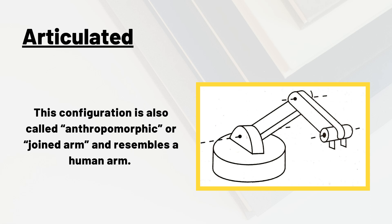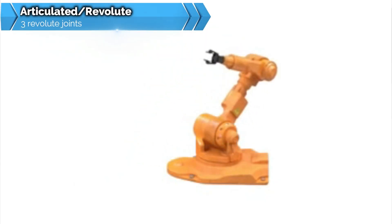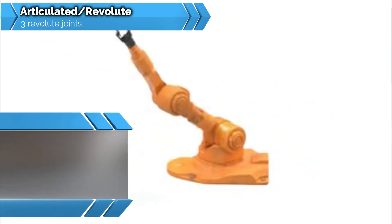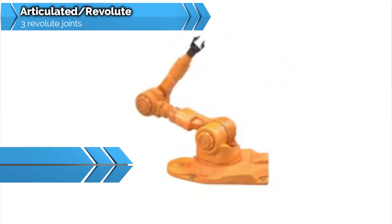Last but not the least, we have articulated or revolute type of configuration. Here we have three revolute joints or three rotary motions. This configuration is also called anthropomorphic or joint arm, and it resembles a human arm. The base revolves around the vertical axis, and the base and arm — that is the shoulder — and another arm — that is the elbow — have rotary joints. This type of configuration is used for spray painting, arc welding, gas welding, material handling in die casting machines, and many more applications.